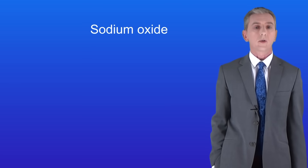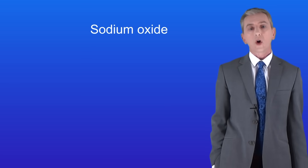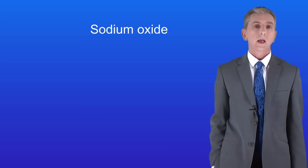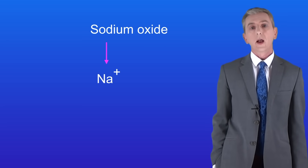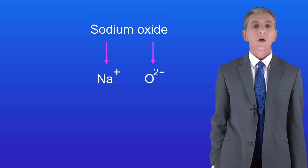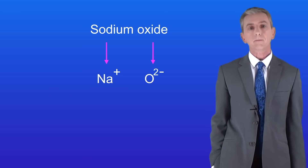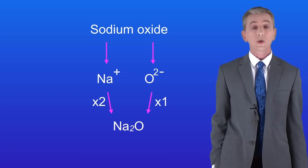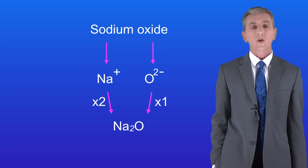Here's another ionic compound: sodium oxide. The sodium ion is Na+ and the oxide ion is O2-. Remember that the charges have to cancel, so we need two sodium ions to cancel out the charge on one oxide ion. The formula is Na2O.